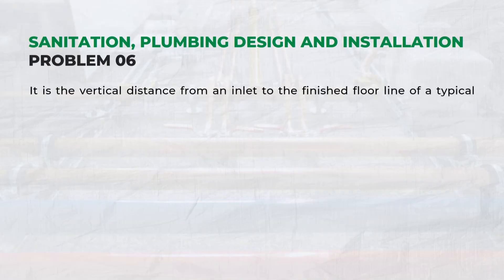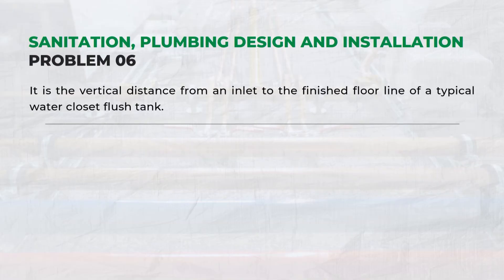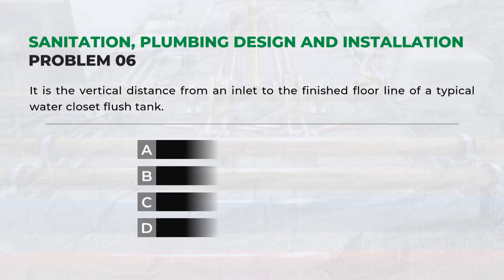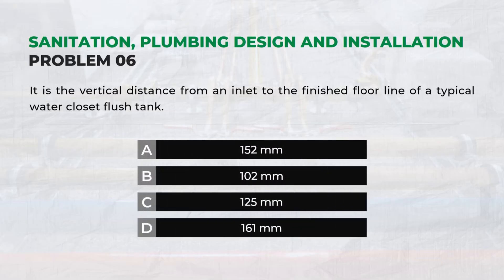It is the vertical distance from an inlet to the finished floor line of a typical water closet flush tank — Answer A: 152 mm.